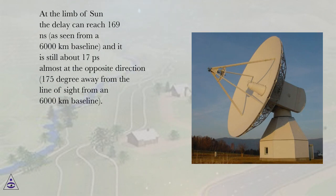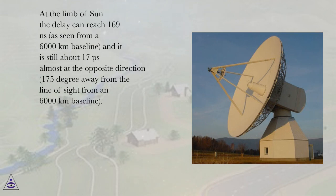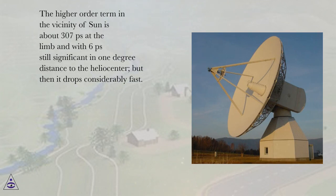At the limb of the Sun, the delay can reach 169 ns as seen from a 6000 km baseline, and it is still about 17 ps almost at the opposite direction, 175 degrees away from the line of sight in a 6000 km baseline. The higher order term in the vicinity of the Sun is about 307 ps at the limb and with 6 ps still significant in one degree distance to the heliocenter, but then it drops considerably fast.